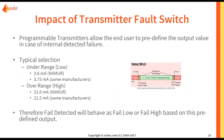Some programmable transmitters allow the end user to pre-define the output value in case of an internal detected failure. You can select if this failure drives the output under range or over range. Therefore, your fail detected failures will behave as your fail low or fail high failures based on this pre-defined output. If you follow the NAMUR standard, under range would be 3.6 mA and over range would be 21.0 mA. However, some manufacturers have it set where under range is 3.75 mA and over range is 21.5 mA, depending on how you configure your system.